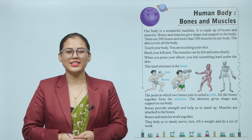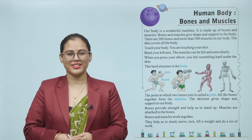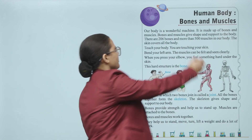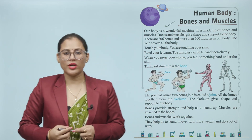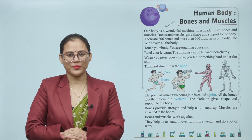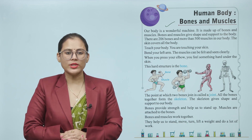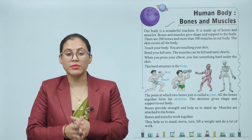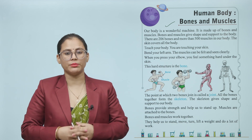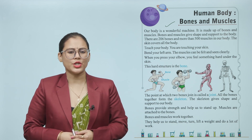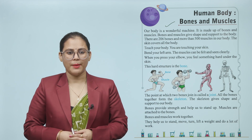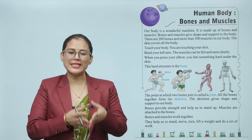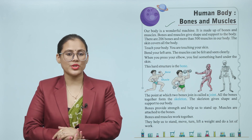Hello children, how are you all? Let's start today's chapter: human body — bones and muscles. Our body is a wonderful machine. It is made up of bones and muscles. Bones and muscles give shape and support to the body. There are 206 bones and more than 500 muscles in our body. The skin covers all the body. Touch your body — you are touching your skin. Bend your left arm; the muscles can be felt and seen clearly. When you press your elbow, you feel something hard under the skin.